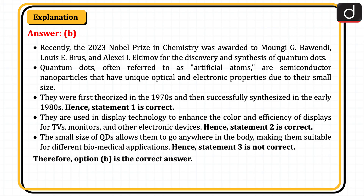Recently, the 2023 Nobel Prize in Chemistry was awarded to Moungi G. Bawendi, Louis E. Brus, and Alexei I. Ekimov for the discovery and synthesis of quantum dots. Quantum dots, often referred to as artificial atoms, are semiconductor nanoparticles with unique optical and electronic properties due to their small size. They were first theorized in the 1970s and successfully synthesized in the early 1980s — hence statement 1 is not correct. They are used in display technology to enhance color and efficiency of TVs, monitors and other electronic devices — hence statement 2 is correct.